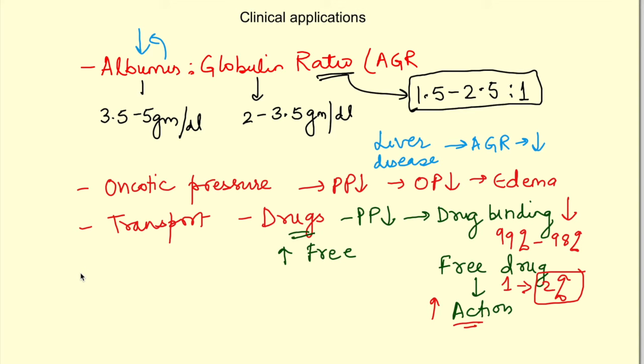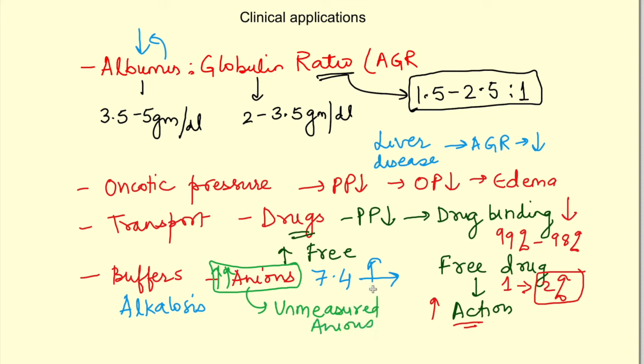Plasma proteins act as important buffers and at plasma pH of 7.4, they are mainly acting as anions. Suppose there is alkalosis - the pH is shifting towards increasing. In this case, more proteins will exist as anions and this will increase the unmeasured anions. If you know the concept of anion gap, there will be increase in anion gap because of increase in unmeasured anions. So we have to interpret the values carefully.